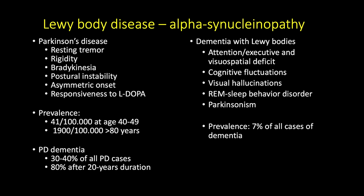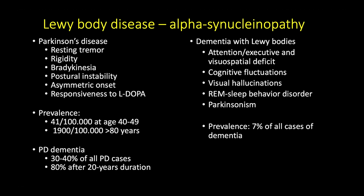Both conditions share REM sleep behavior disorder, essentially dream enactment. During REM sleep — when we have rapid eye movements and dreams — we normally have complete muscle tone elimination so we cannot act out our dreams. Patients who do have dream enactment are at risk for alpha-synucleinopathy, almost all of them. This is typical in Lewy body disease but can also be a risk factor for Parkinson's. Eventually, motor signs of Parkinson's develop in all patients with dementia with Lewy bodies, but tend to be less typical — less tremor, more rigidity.